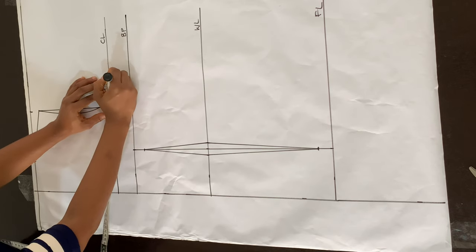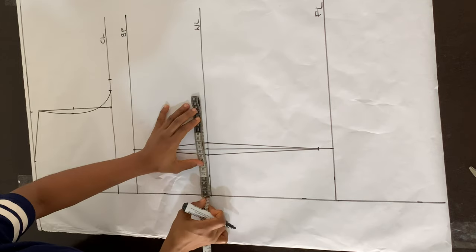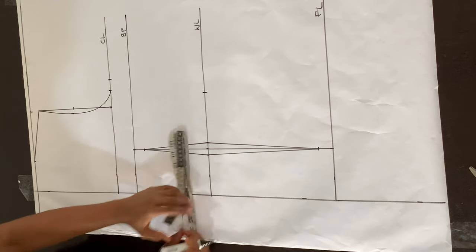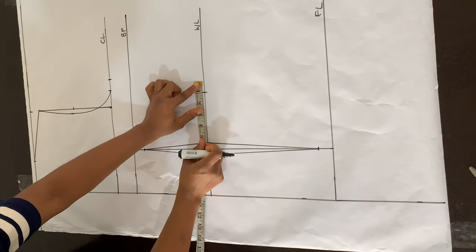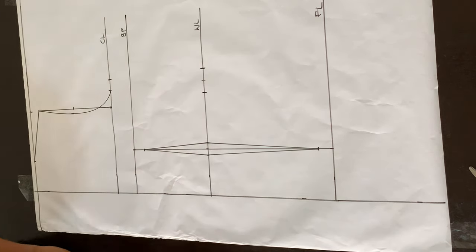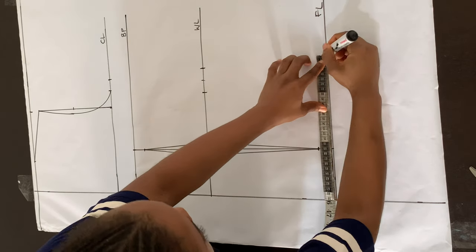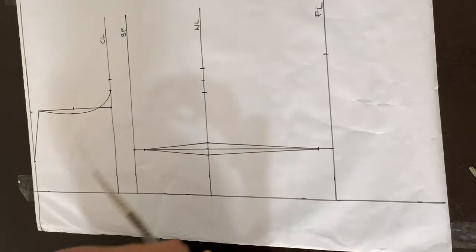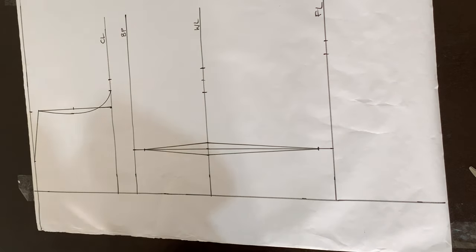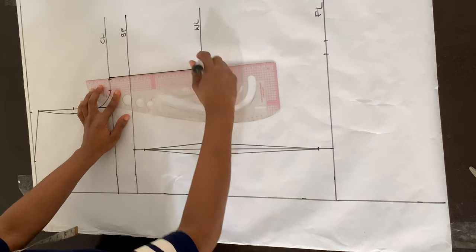I'm adding one inch to the bust circumference at the chest line. On the waistline I'm dividing the waist measurement by four, marking that, measuring my darts and replacing that dart measurement, and adding an extra one inch sewing allowance. At the full length line I'm dividing the hip circumference by four, marking that, and adding one inch sewing allowance. Then I'll connect all those points together.